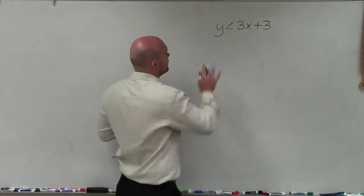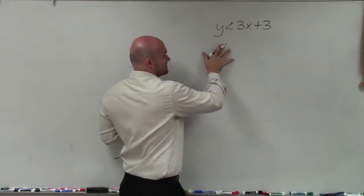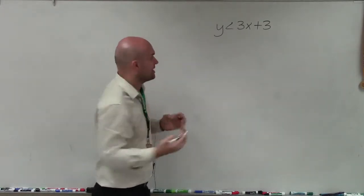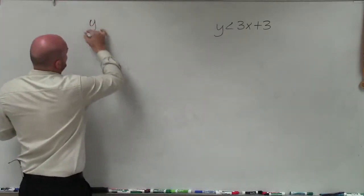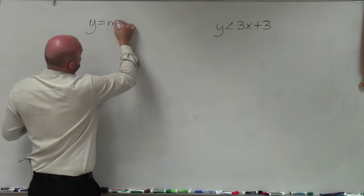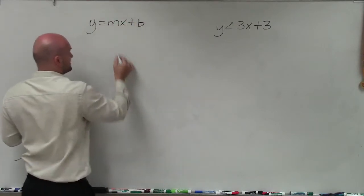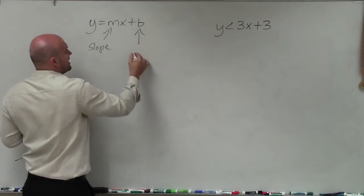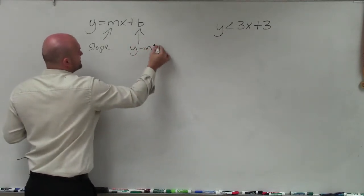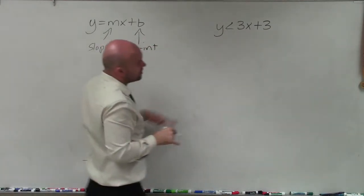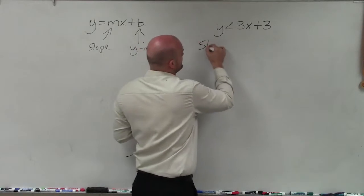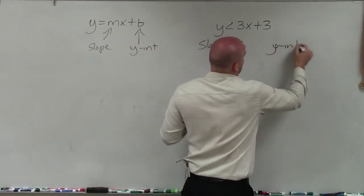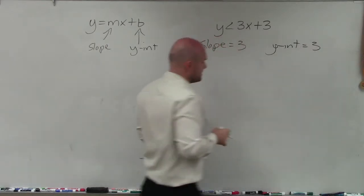When we're graphing in slope-intercept form, the main important thing is we want to understand what is the slope and what is the y-intercept. If I have an equation in y equals mx plus b format, we know that m represents the slope, which is a ratio, and b represents the y-intercept. In this case, my slope is equal to 3 and my y-intercept is also equal to 3.